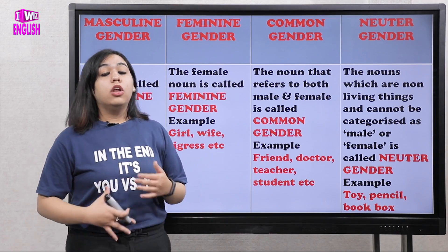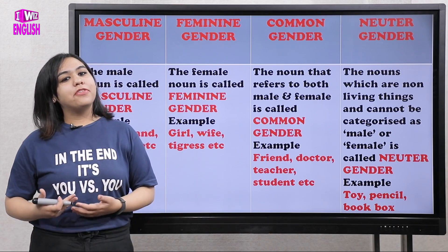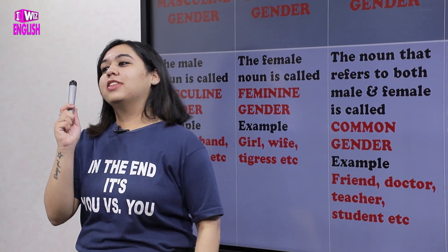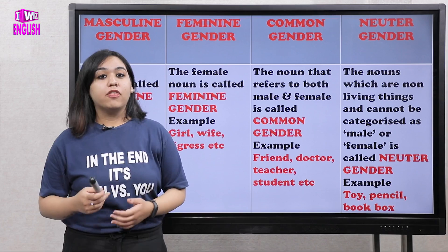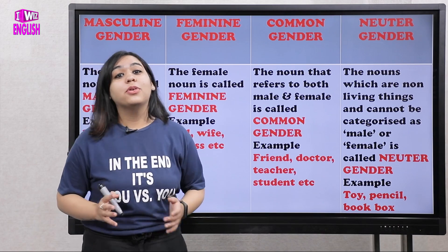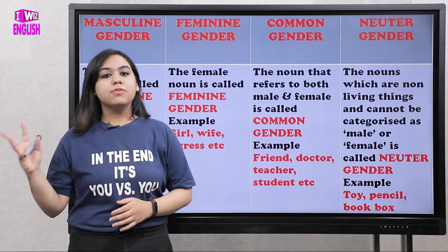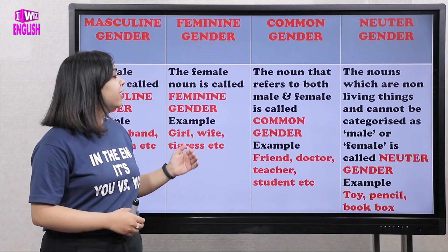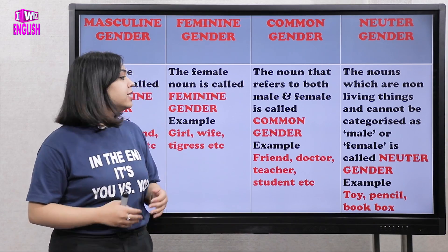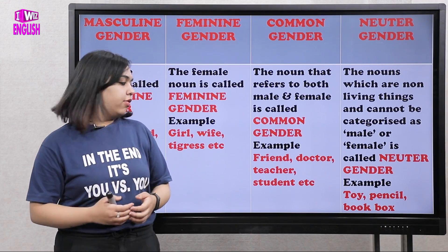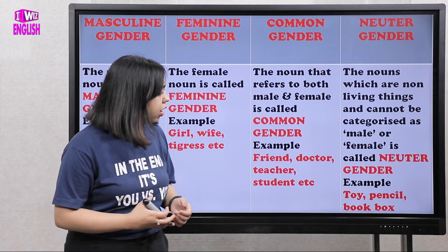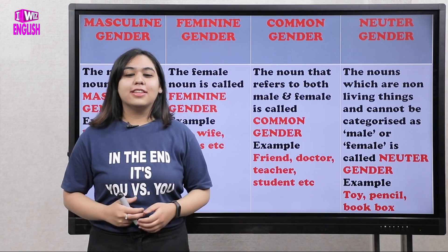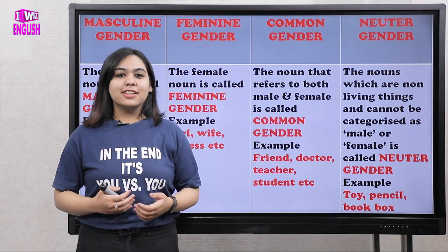Neuter gender refers to things you cannot classify as male or female. Can you classify this pen as male or female? No. Can you classify this board? No. Things that cannot be categorized as male or female are called neuter gender — mostly non-living things like toy, pencil, book, or a lunchbox. I hope this topic is clear to you, and we'll meet in our next video. Until then, take care.